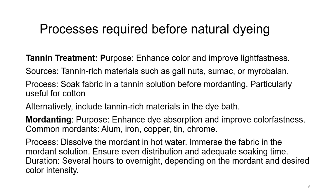The next step is tannin treatment. The purpose is to enhance color and improve light fastness, using tannin-rich materials such as gall nut, sumac, or myrobalan. The process involves soaking the fabric in tannin solution before mordanting. This is particularly required and useful in the case of cotton, linen, or hemp, and gives enhanced color and improved light fastness.